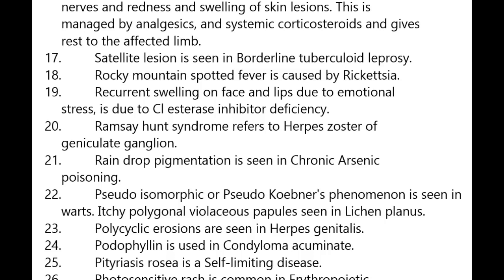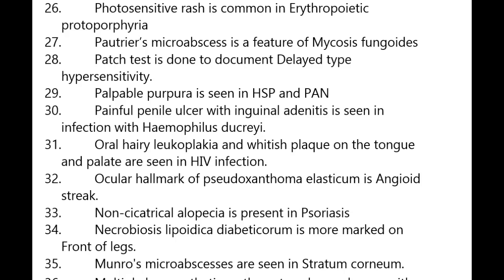Itchy polygonal violaceous papules are seen in lichen planus. Polycyclic erosions are seen in herpes genitalis. Podophylline is used in condyloma acuminata. Pityriasis rosea is a self-limiting condition. Photosensitive rash is common in erythropoietic protoporphyria.